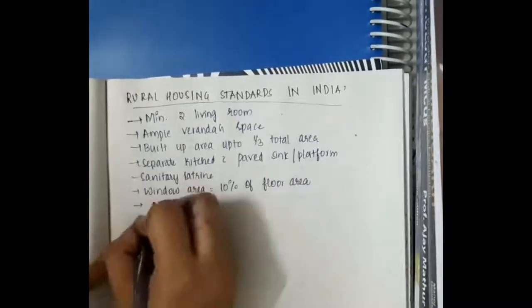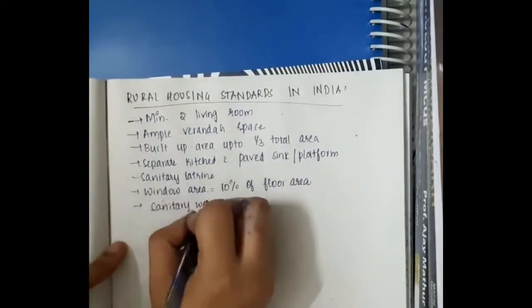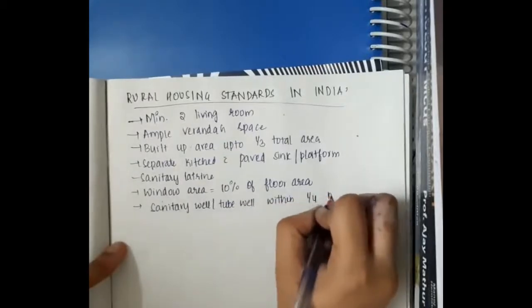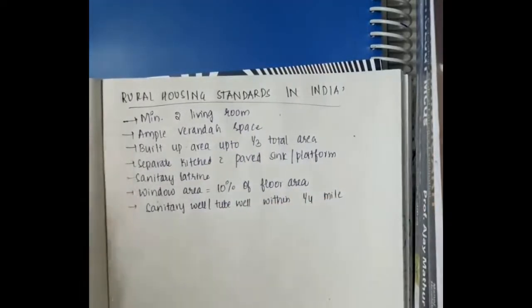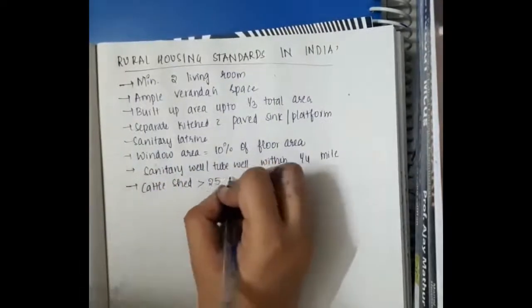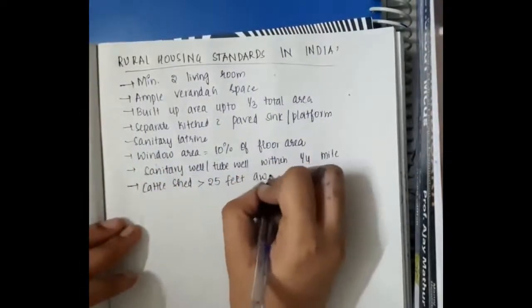Window area should be equal to 10% of floor area. Sanitary well and tube well should be within 1 4th mile. And then cattle shed should be more than 25 feet away.